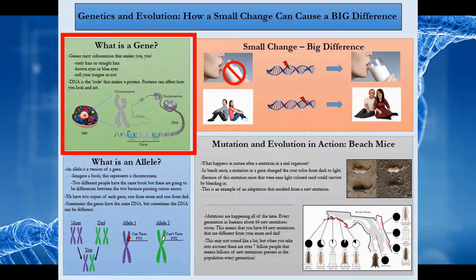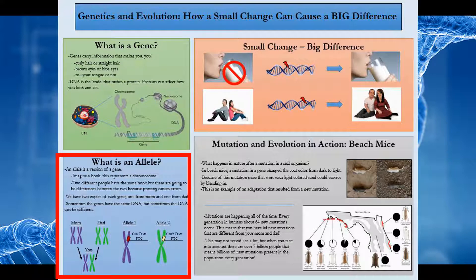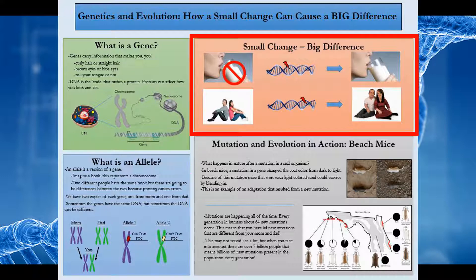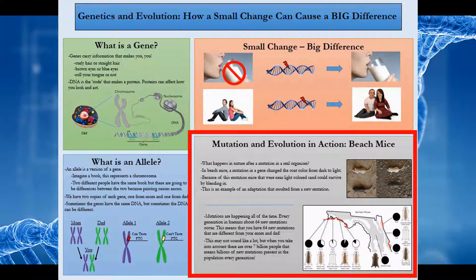We call different types or forms of genes alleles. You may have an allele that confers blue eyes, while someone else may have an allele that confers brown eyes. We get alleles from our parents — one from mom and one from dad. New alleles can be created by a mutation in DNA, and some mutations can cause dramatic changes. Scientists have found many interesting cases in natural populations where a single DNA mutation can have important consequences for evolution.